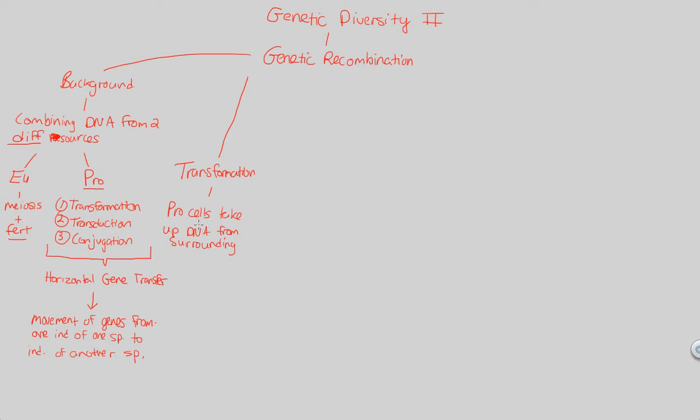This is exemplified by something we went over in Bio 1 when we talked about DNA being the genetic material of life: the Griffith experiment. Fred Griffith's experiment was grounded upon this idea of transformation. This is exemplified by figure 16.2. That's transformation in a nutshell.